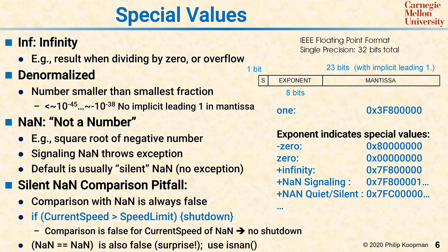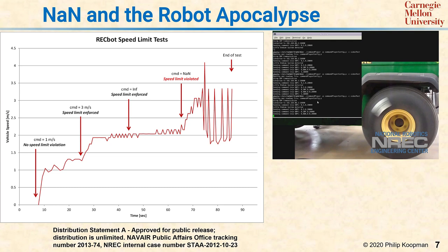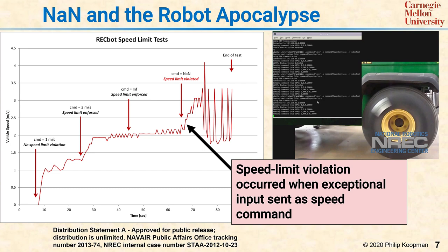Here's a concrete example of what happens when you generate a NaN in a computation and rely on the result of that computation for control. This is a fault injection test on a robotic test platform that had been used for many years without incident, in which my research team injected a NaN as a speed value. We found out that the software correctly enforced the speed limit with infinity, because the comparison is infinity greater than speed limit results in true. But when we put in a NaN, the software in fact had the bug that it compared NaN with the speed limit, and got a false, and allowed the system to go past its speed limit, resulting in a control loop destabilization. So that you can see for yourself, I'll run the video from that experiment next.